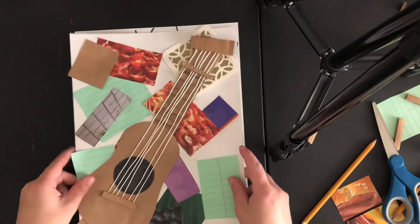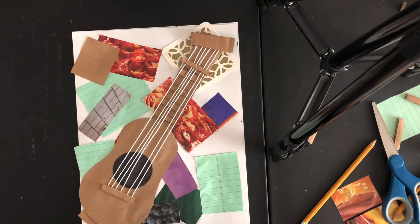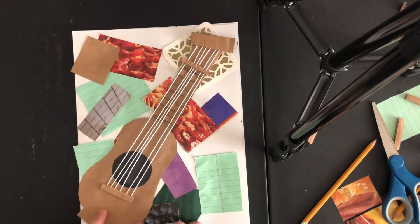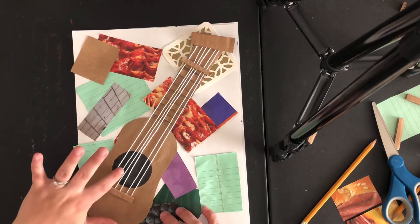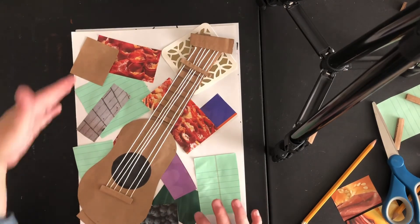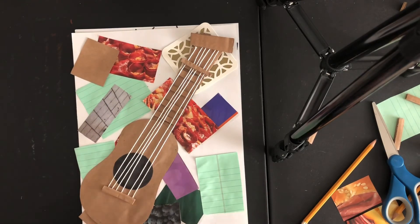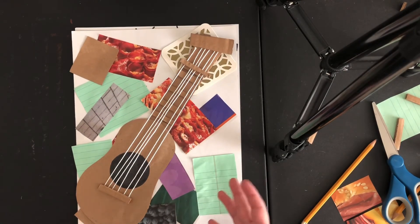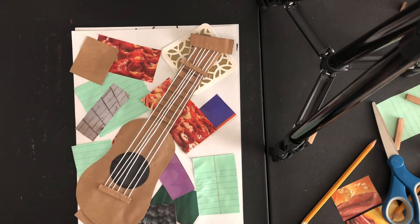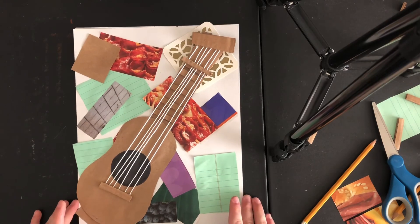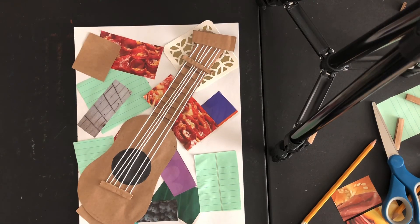And then you have your constructed version where you use paper, cardboard. Again, I used brown paper bags, like what you get at the grocery store, just some string, things like that. Clippings from advertisements, magazines, and then you can create a collage and have your guitar be a little bit more three dimensional and abstract that way. So I hope you enjoyed this lesson and I hope you're doing well. Take care. Bye.